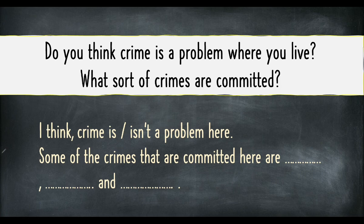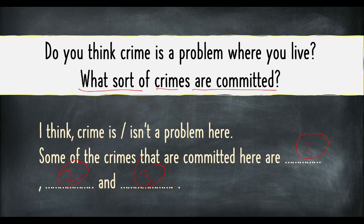The next part: What sort of crimes are committed? Apakah jenis-jenis jenayah yang dilakukan? For this question, you just give examples: 'Some of the crimes that are committed here are crime 1, crime 2, and crime 3.' If you have your textbook, you can refer to page 70 exercise 1, and page 72 exercise 1 also. In both exercises you will be given some vocabulary — words related to crime — so you might get some ideas there.